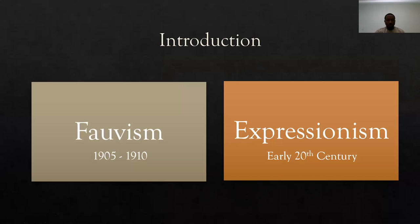So, a little quick introduction: Favism took place starting in 1905 and went down to 1910. As far as Expressionism, a lot of articles said it started in the early 20th century, but it really started right after Favism. People say that Expressionism really came from the Favism movement, which we'll get deeper into with each one of those and how both of those came about.